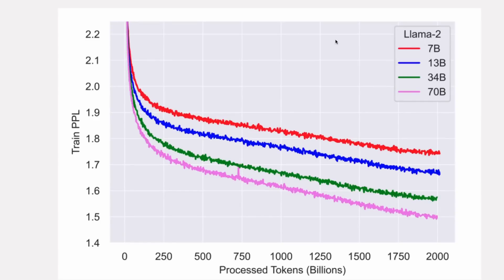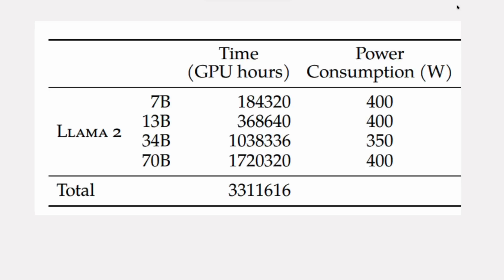This graph shows their pre-training loss curves for the different models trained on 2 trillion tokens. What amazes me is that the loss curves are still going down, which raises the question of whether adding another trillion tokens would continue to reduce loss proportionally. According to the GPT-4 paper, probably yes. We can see the 70 billion parameter model is doing very nicely in training, and the paper also includes information on how long each model took to train and the power consumption.